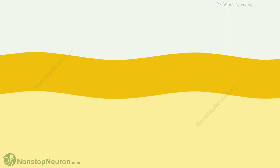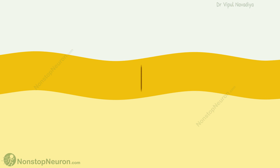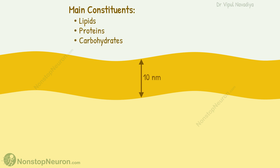The cell membrane is very thin and pliable. Its thickness is only about 10 nanometers. The main constituents of the cell membrane are lipids, proteins, and carbohydrates. Lipids make up about 40%, proteins about 55%, and carbohydrates about 5% of the membrane.